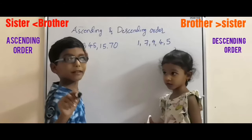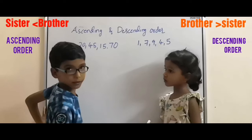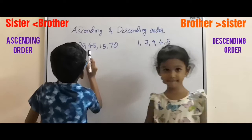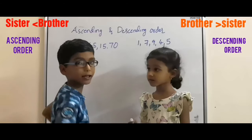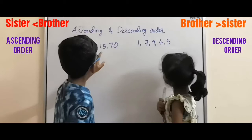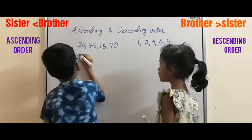First I will explain ascending order. Ascending order means small to big. Here some numbers are given: four numbers — 20, 45, 15, and 70. Here I want to search the small number. The small number is 15. So first write 15.